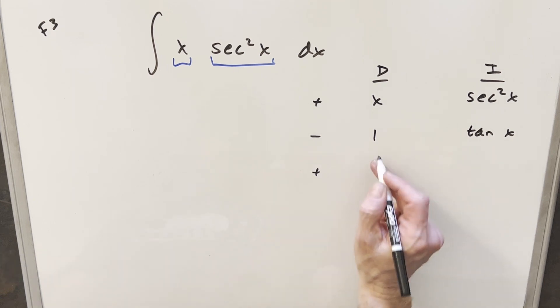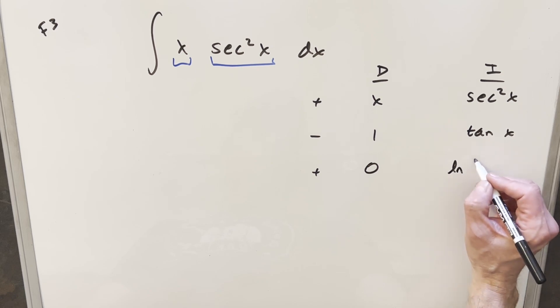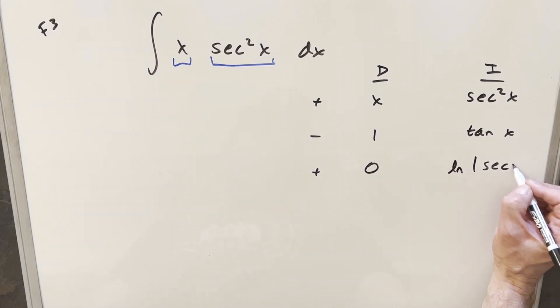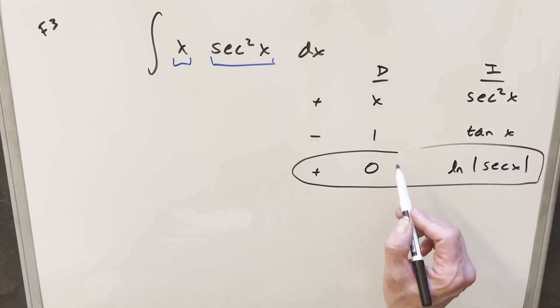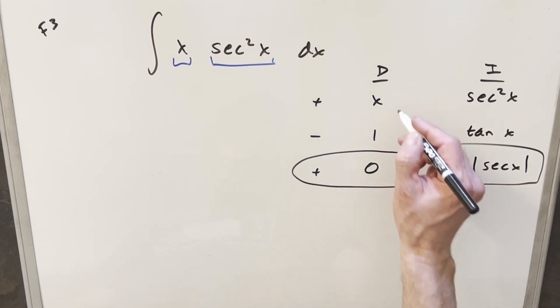If I differentiate again, this is going to be zero here. And the integral of tan x, this is going to be just natural log absolute value secant x. So we don't have to integrate down here the last row, just because we have a zero here, that's going to zero that out.